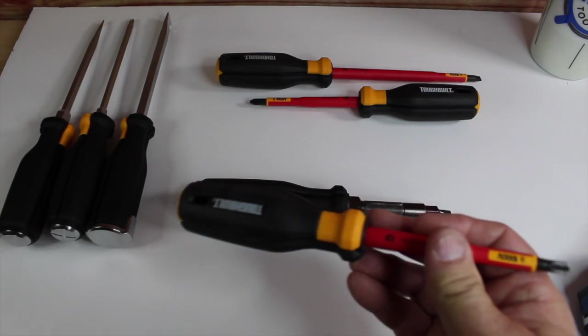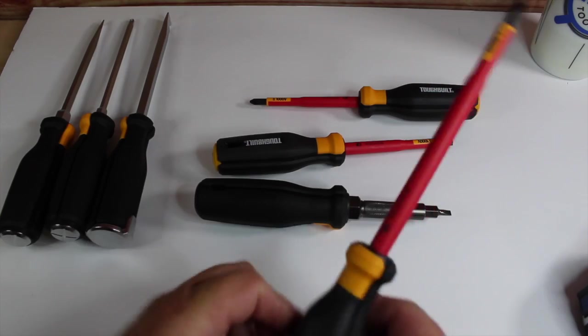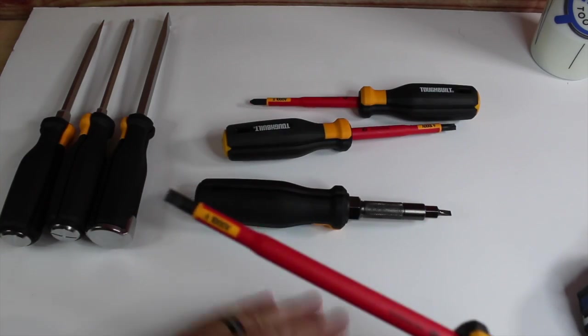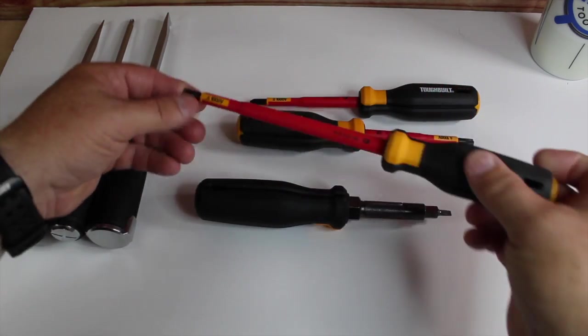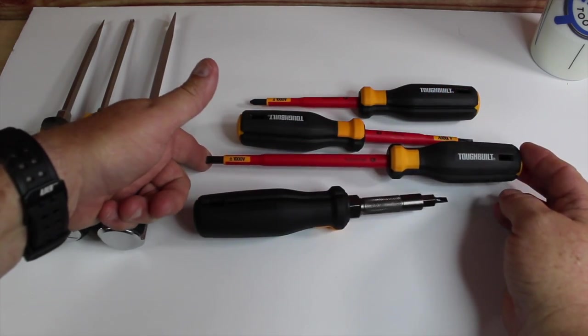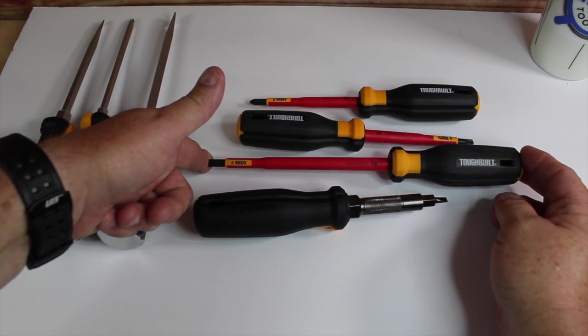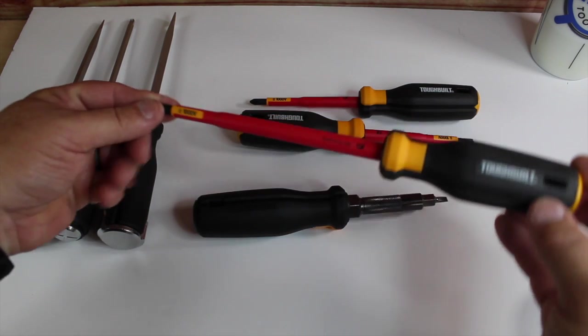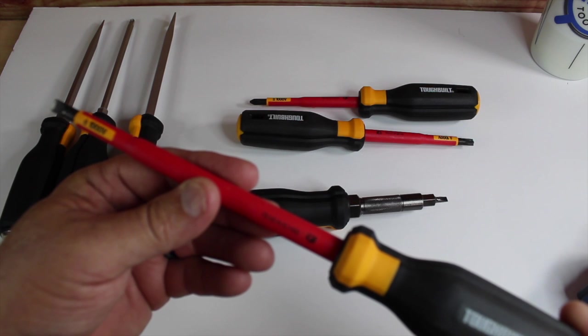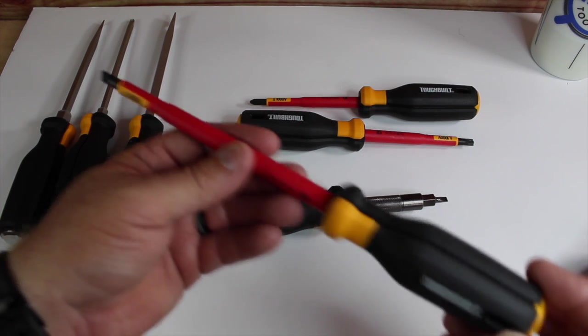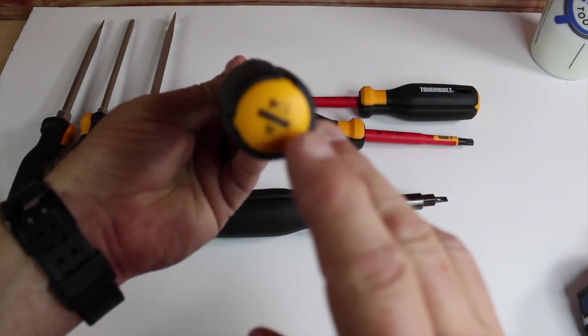And then they came out with the thousand-volt screwdrivers. Maybe somebody can answer the question for me, but I was kind of wondering why the slotted screwdriver on the thousand-volt screwdriver—why it's longer. Maybe somebody could comment and let me know. I have no idea. But this is the TBH5NSSL14X6, and this is the slotted.